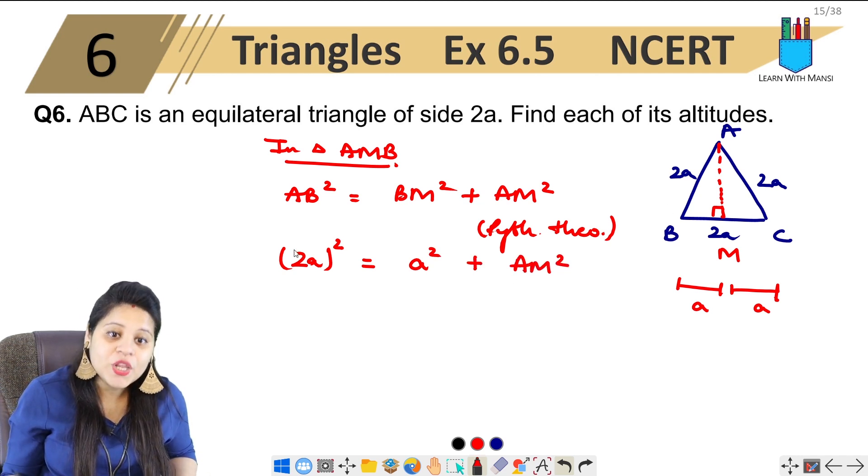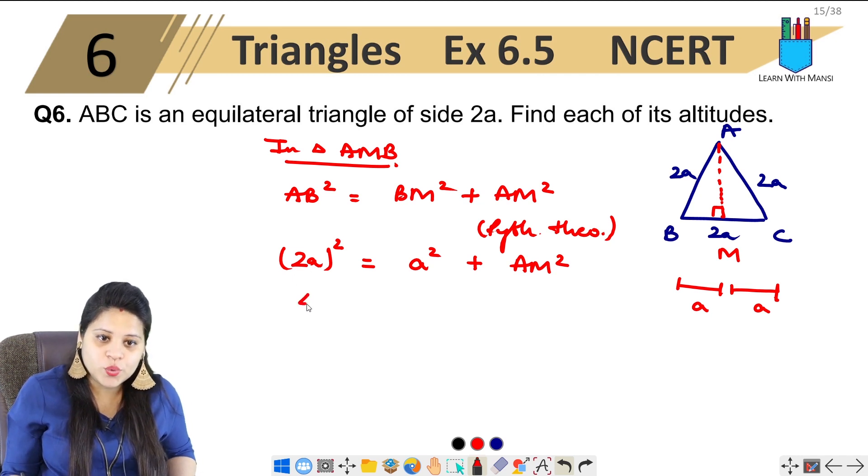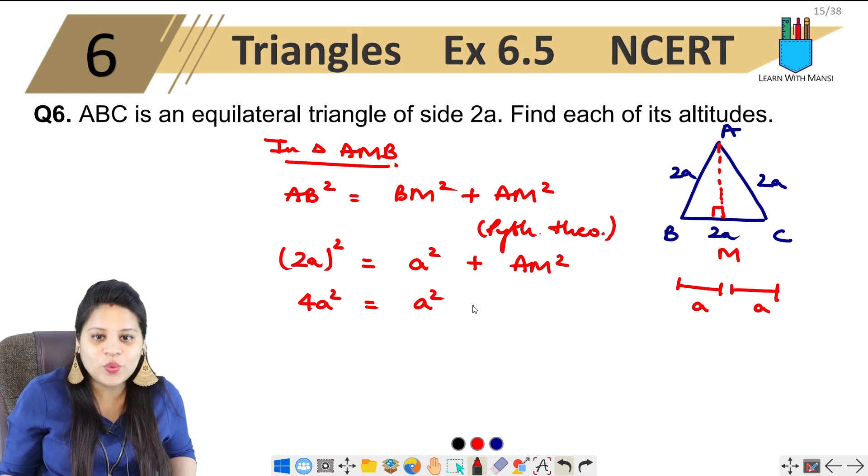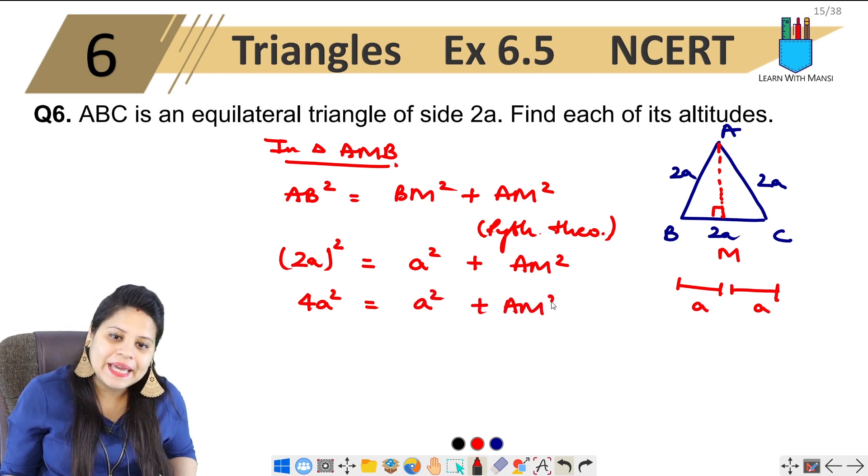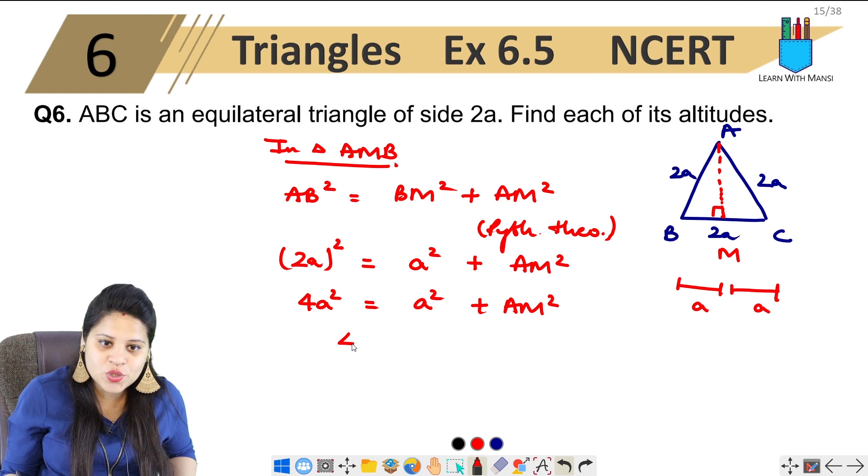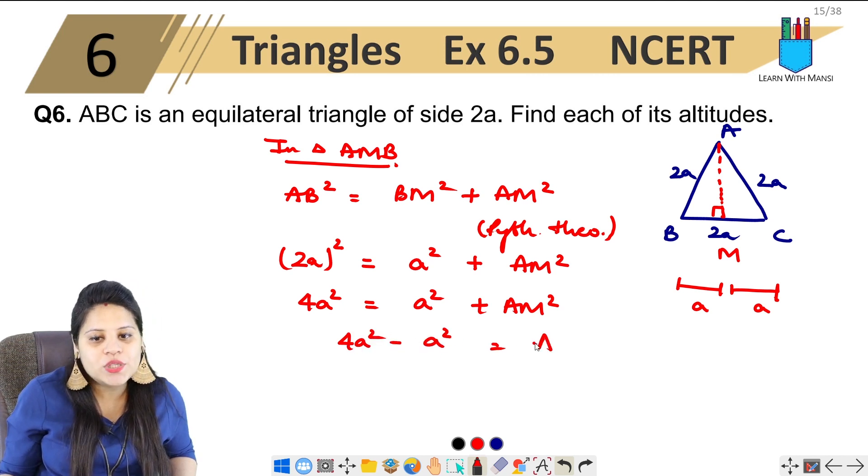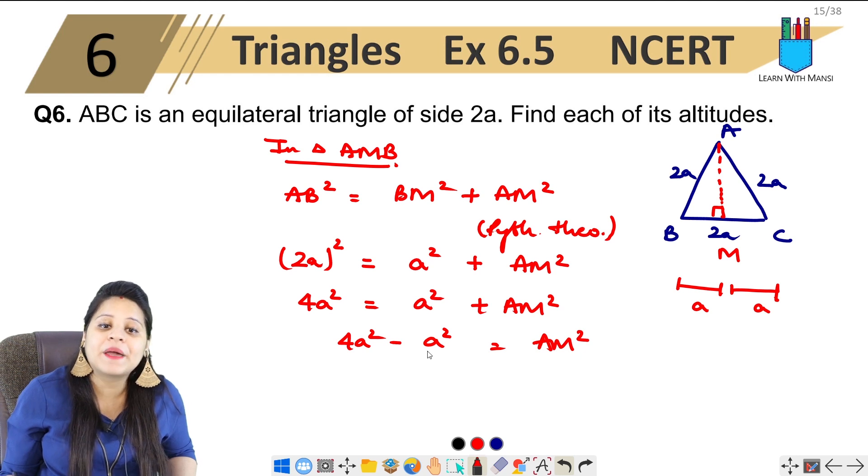So this is 2A square, 4A square equals to A square plus AM square. This will happen 4A square minus A square equals to AM square.